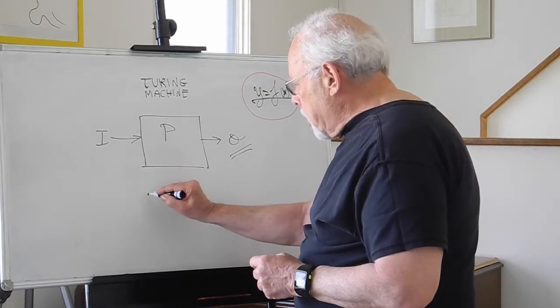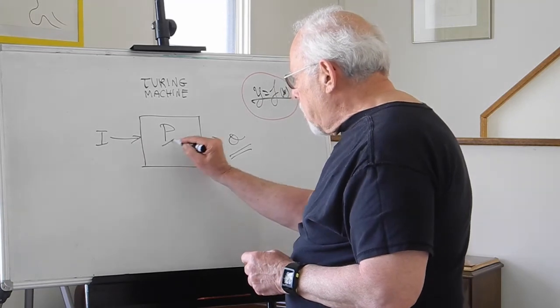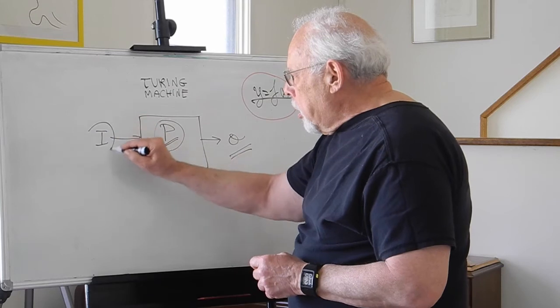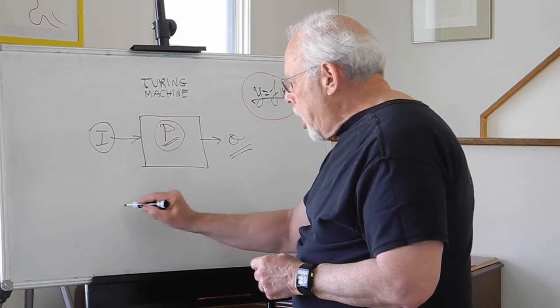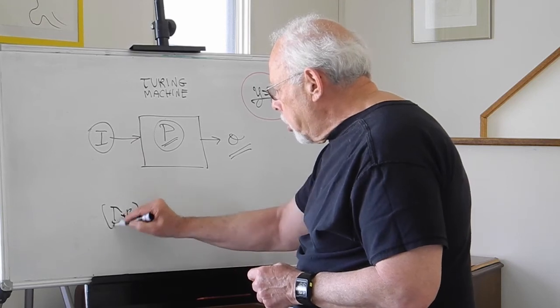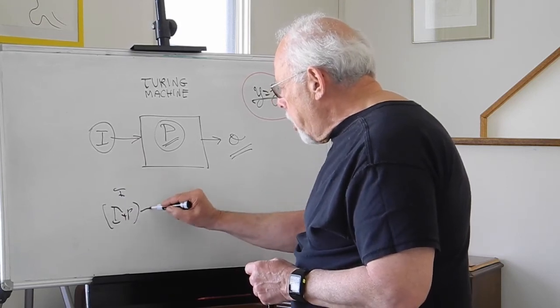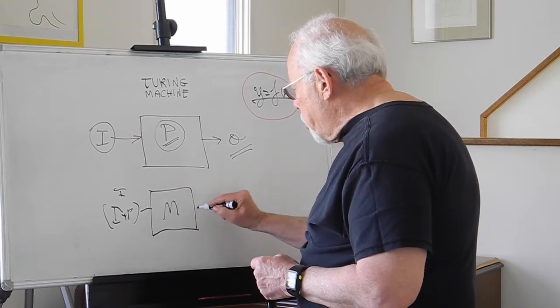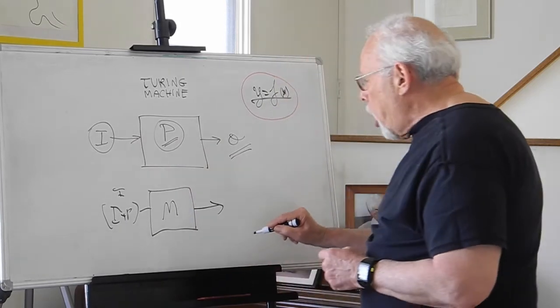What Turing says is, let's take the number that is represented by the program, and the number that represents the input, and generate a new input into a machine that will give us an output, a binary 0 or 1.